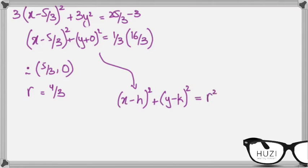Now, the standard equation of the circle is x minus h whole squared plus y minus k whole squared equals to r squared. This means that 16 over 9 equals to r squared.